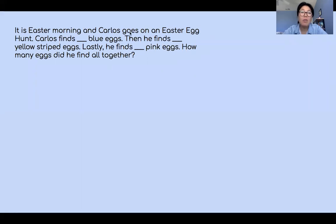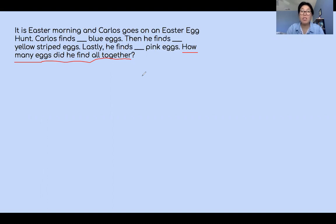The question is asking how many eggs did he find all together. Usually when the question asks 'all together,' that means it has to do with addition — adding all the numbers up to find the total amount. And the total amount they're looking for is the total number of eggs that Carlos found.